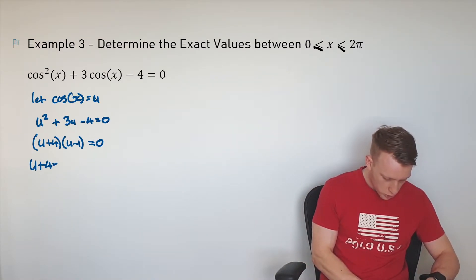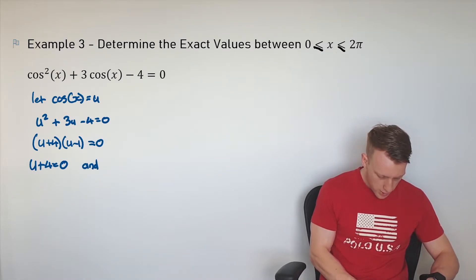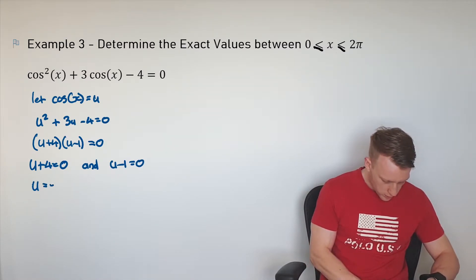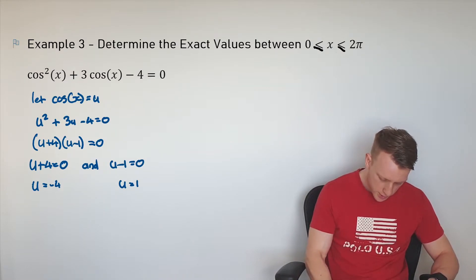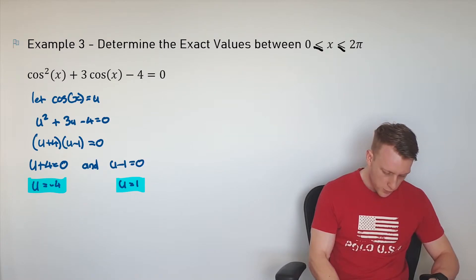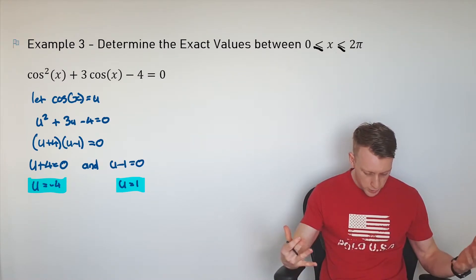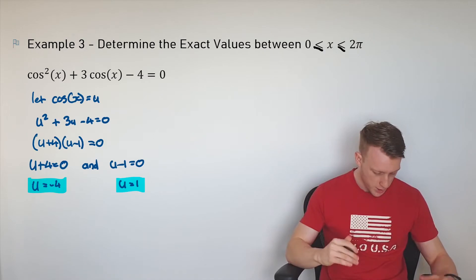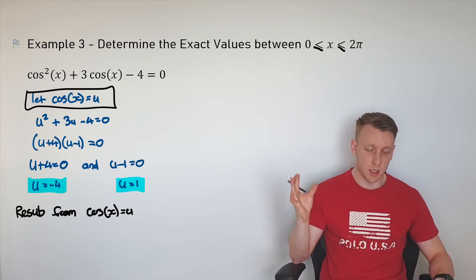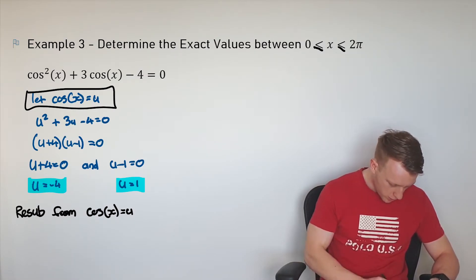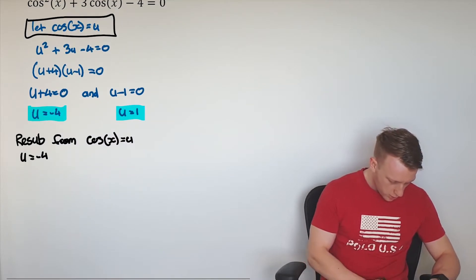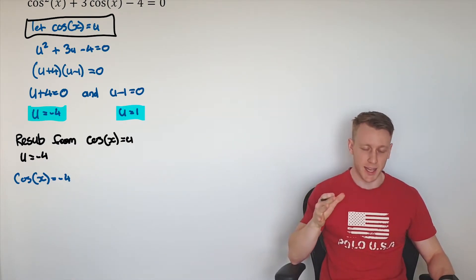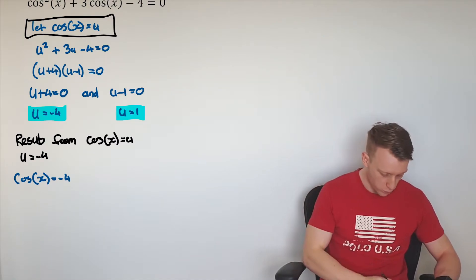Using the null factor law: u plus 4 equals 0 and u minus 1 equals 0, so u equals negative 4 or u equals 1. Two solutions for u. But since we've used substitution we're going to have to check or verify our solutions — whether to accept or reject them. Re-substituting, when u equals negative 4, I'd say cos of x equals negative 4. Straight away I'm going to reject that, because cos of x is never equal to negative 4.